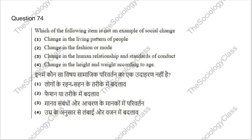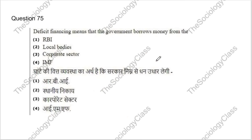Question 74: Which of the following is NOT an example of social change? Options: change in living pattern of people, change in fashion or mode, change in human relationships and standards of conduct, or change in height and weight according to age. The correct answer is option 4 — change in height and weight has nothing to do with social change.